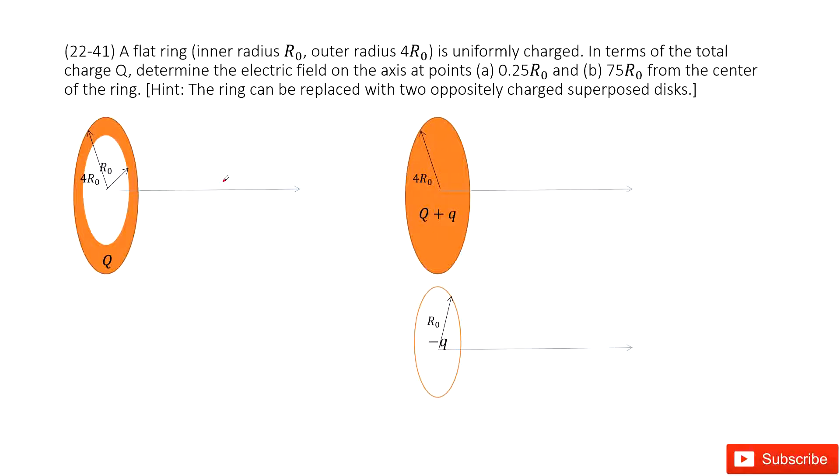We have a flat ring, inner radius r0, outer radius 4 times r0, with charge Q. We need to determine the electric field at different locations. The first part is the distance from the center is 0.25 r0, which is very small compared to r0 and 4 times r0.